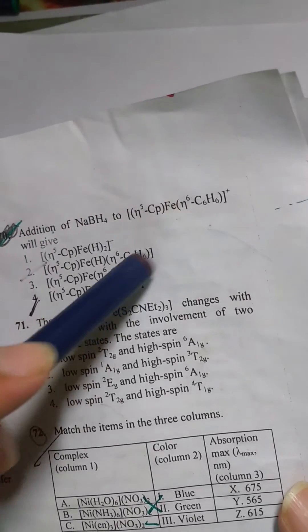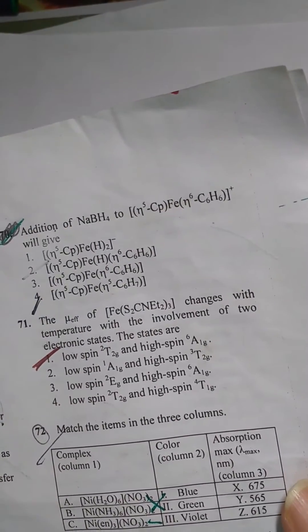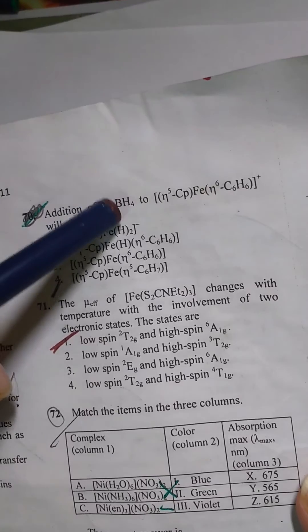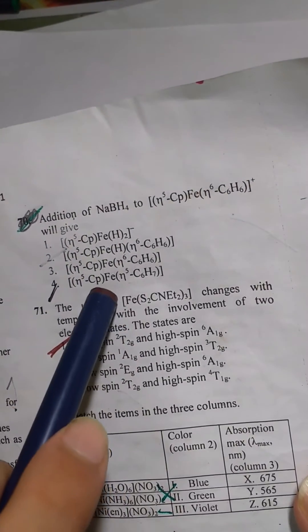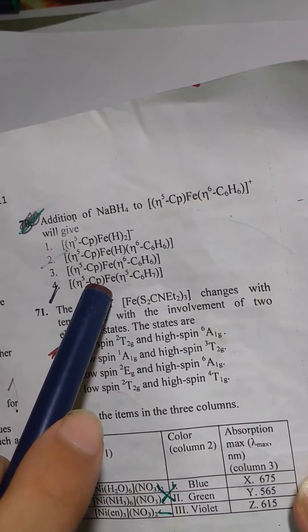So this is an 18 electron complex so on addition of NaBH4 it will also form an 18 electron complex. If we calculate out of all of these we will find that this complex over here, the last option, is an 18 electron complex.